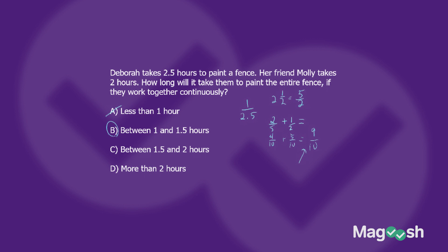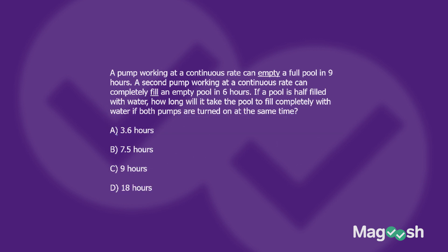This last problem is even harder, so I encourage you to pause and try it yourself. A pump working at a continuous rate can empty a full pool in nine hours. A second pump working at a continuous rate can completely fill an empty pool in six hours. Notice that the first pump is emptying the pool — sucking water out — while the second pump is filling it, so there's a counter effect.